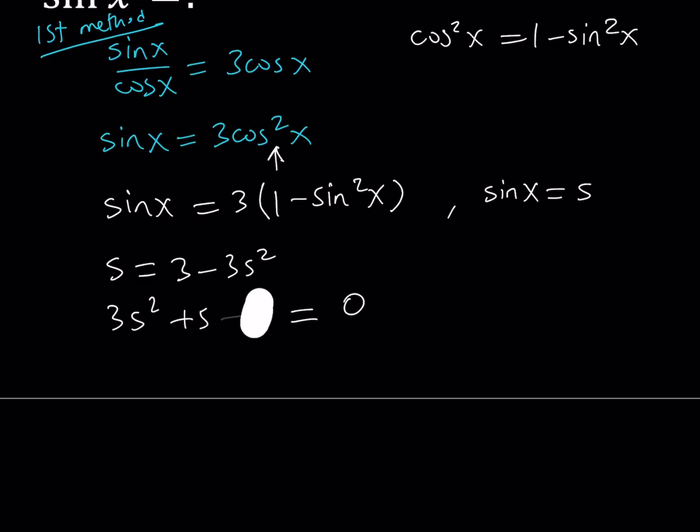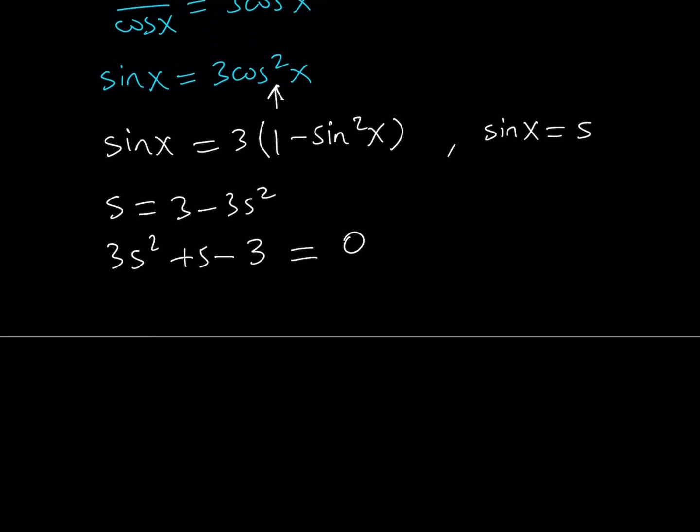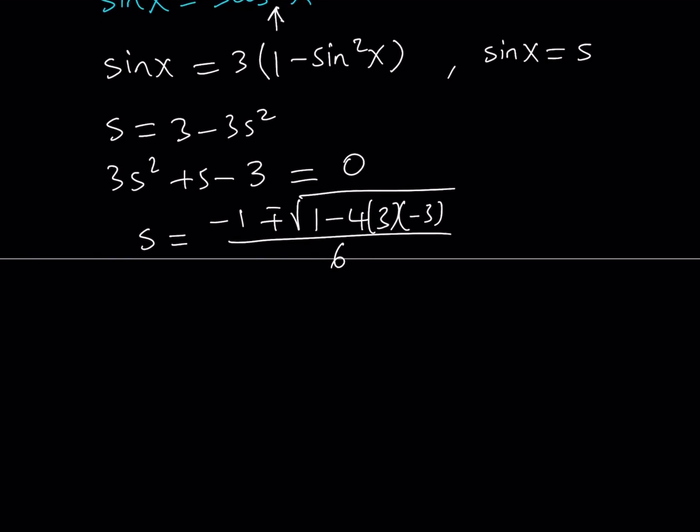So this is a quadratic equation. And we can easily solve it by using the quadratic formula. Or we can try factoring as well if it's factorable. I don't think it's factorable. So let's go ahead and just use the quadratic formula. If you use the quadratic formula, s is what we're looking for. Remember, s is equal to sine of x. So s equals negative b plus minus the square root of b squared, which is 1, minus 4 times a times c. C in this case is negative 3. So the product of two negatives is going to give us a positive quantity, which means we're going to have real solutions.